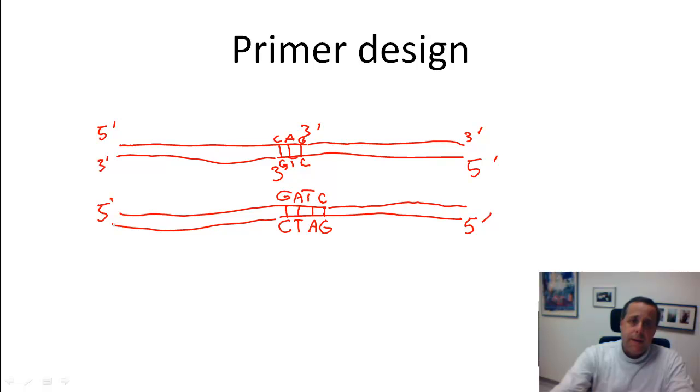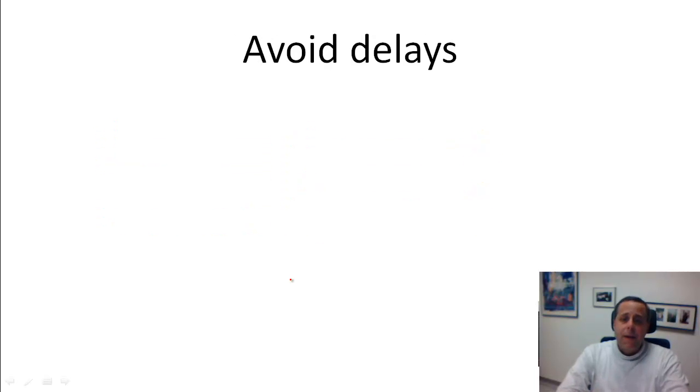Now, apart from that, it can happen that you still get primer dimers even though there's no obvious sequence that would provide you with an opportunity of the primers to anneal to each other. Well, why would that happen?